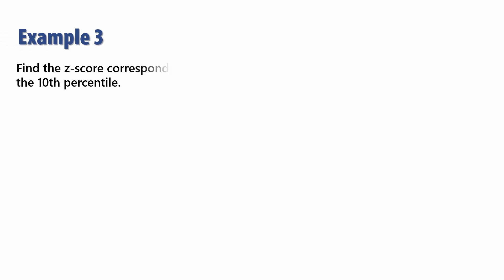In the third example, we want to find the Z score corresponding to the 10th percentile. Since percentile means percent below, we have 0.10 of the area below Z and so it will be on the negative side.